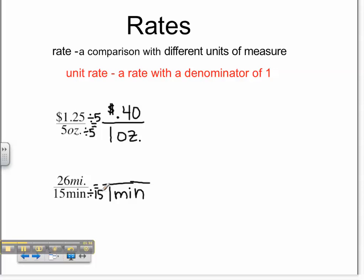You have to divide 26 divided by 15. And 26 divided by 15, Kaylee, is what? 1.73 miles. So we know that we can drive 1.73 miles in one minute.